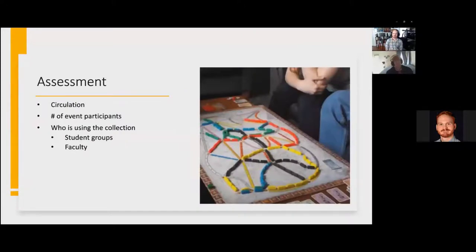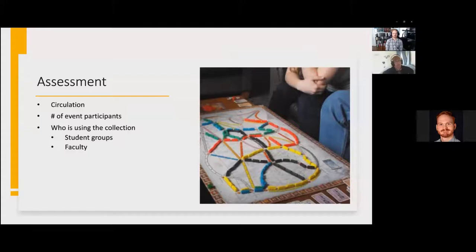For assessment: you want people to know how great your collection is and that people are checking it out. Catalog your items so the lack of a catalog record doesn't slow down your ability to count circulations. Definitely check things in and out — you'll have a circulation count. That'll help you say, 'this game went out 25 times last year, we need a second copy,' or show the collection is working. We also count the number of people at all of our events, so keep track of who's coming, what they're doing, whether they're having fun. You can survey them if you want to find out more.